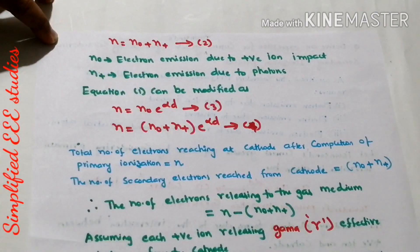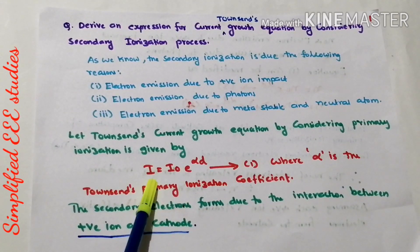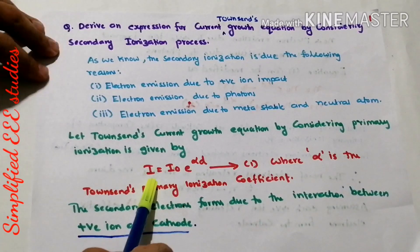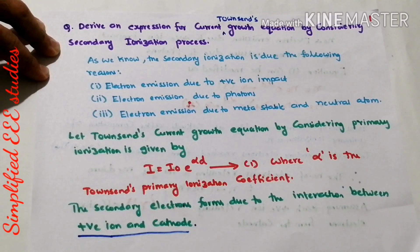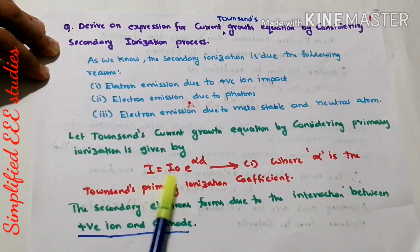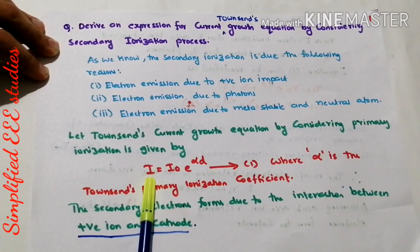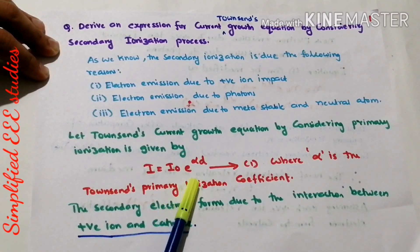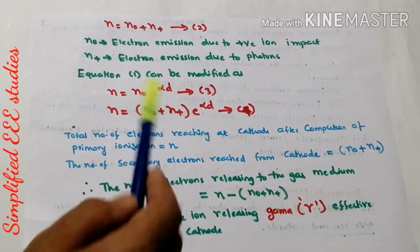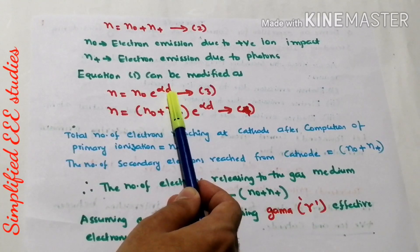Similarly, N⁺ is defined as electron emission due to photons. Recalling equation number 1 — i = i₀·e^(αd) — and rewriting it in terms of number of electrons, where current is nothing but the flow of electrons, we get N = N₀·e^(αd). Call this equation number 2. So substituting N₀ with (N₀ + N⁺), we can write N = (N₀ + N⁺)·e^(αd). Call this equation number 4.